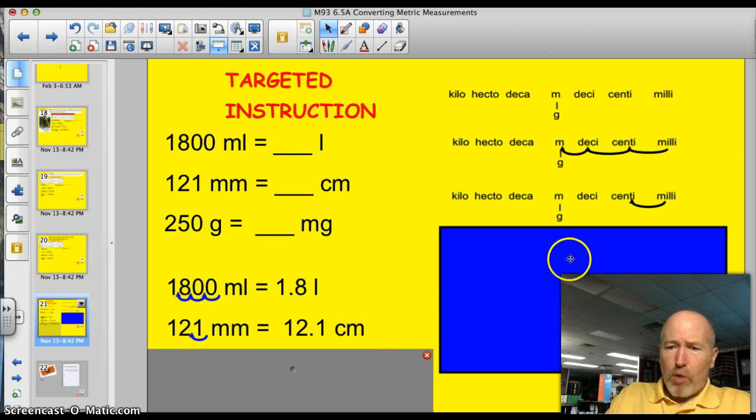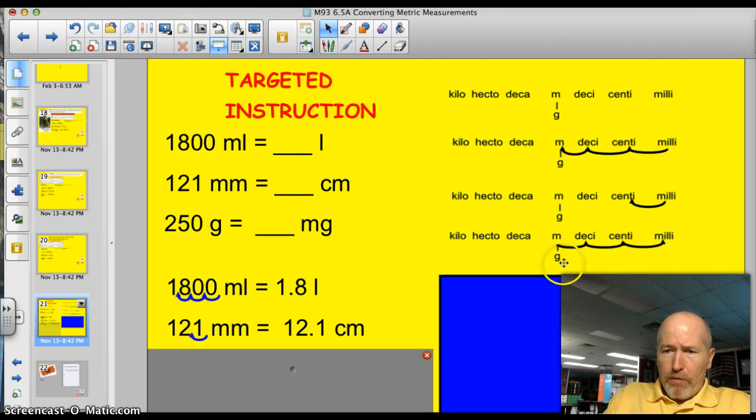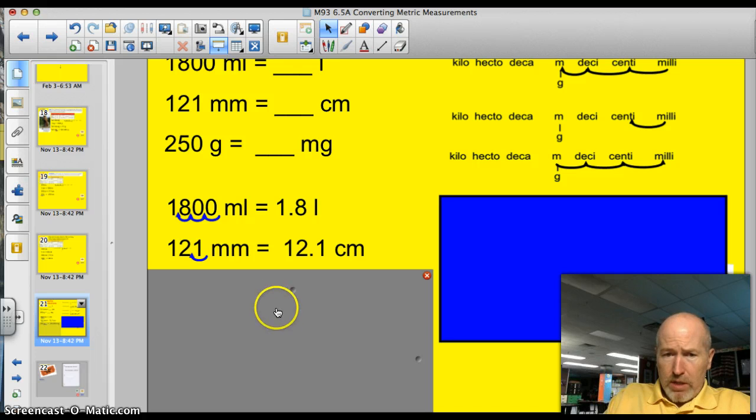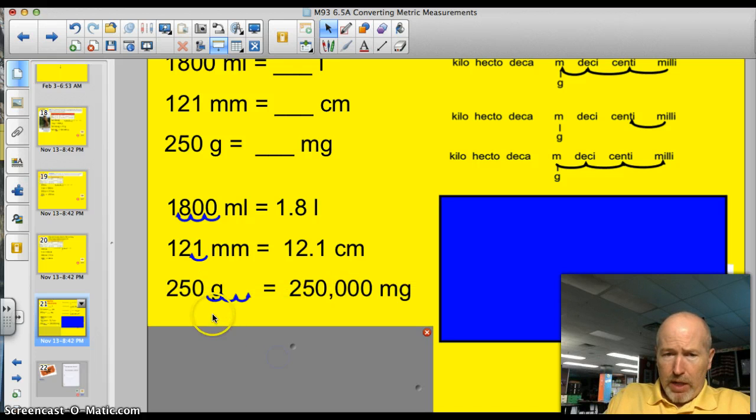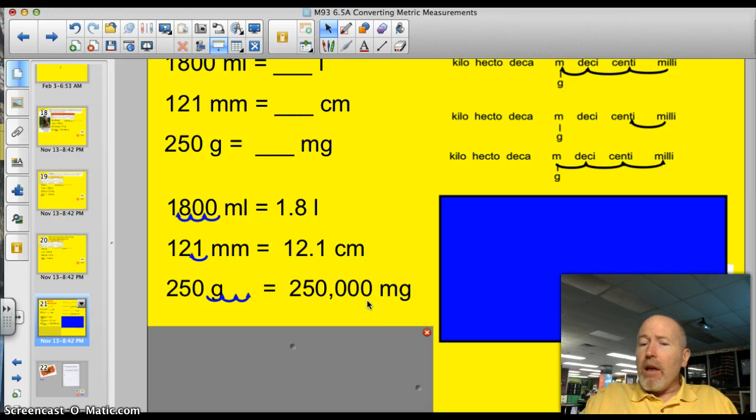And our last one, 250 grams. We're going to milligrams. So here we're going from grams to milligrams. I'm going to go one, two, three spots to the right. So, of course, I have to move my decimal three spots to the right. One, two, three, giving me a total of 250,000, because I had to put in three placeholders.